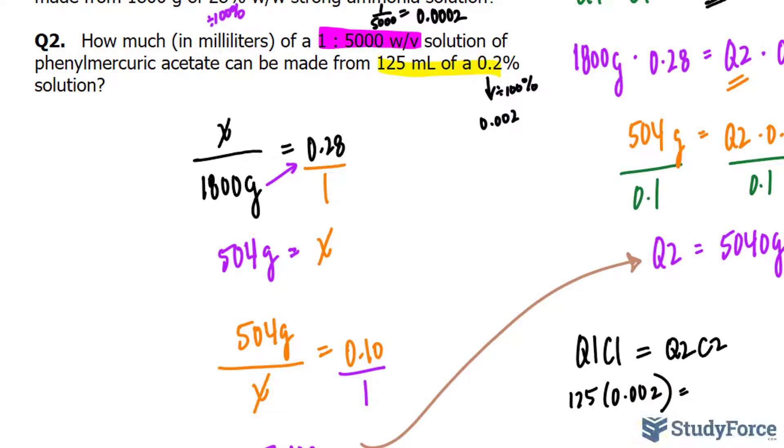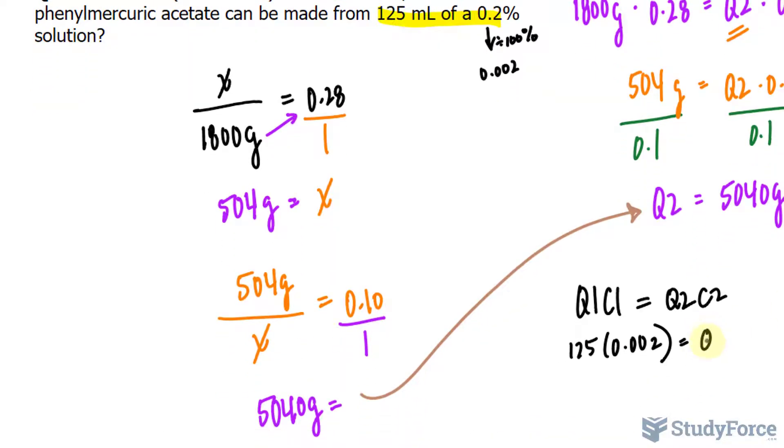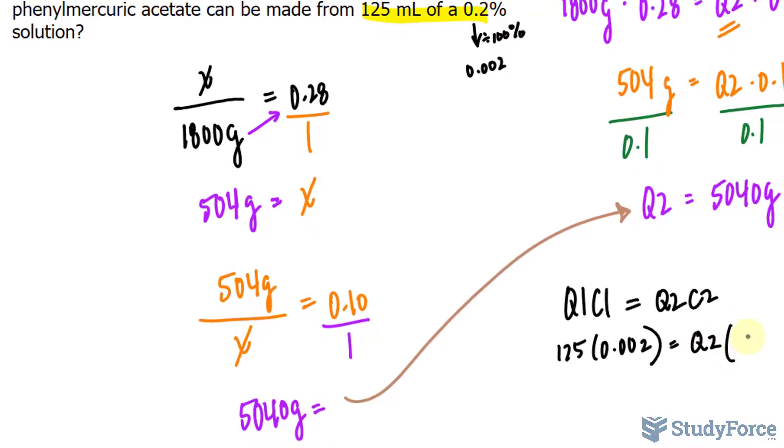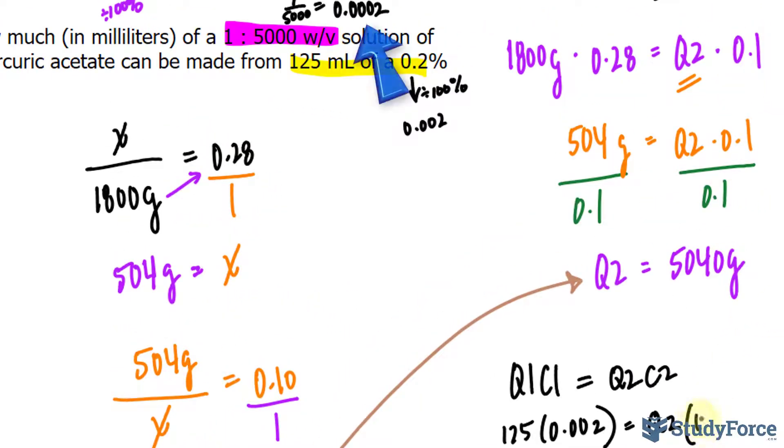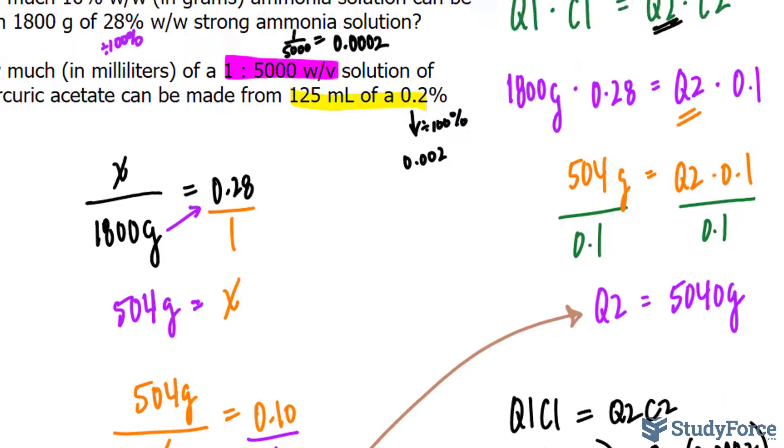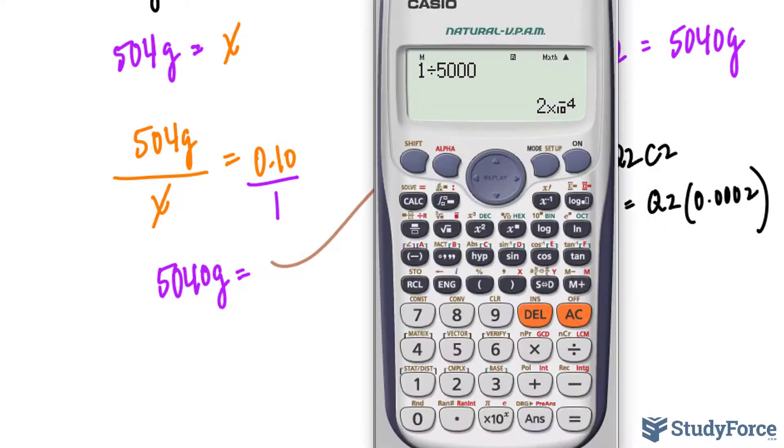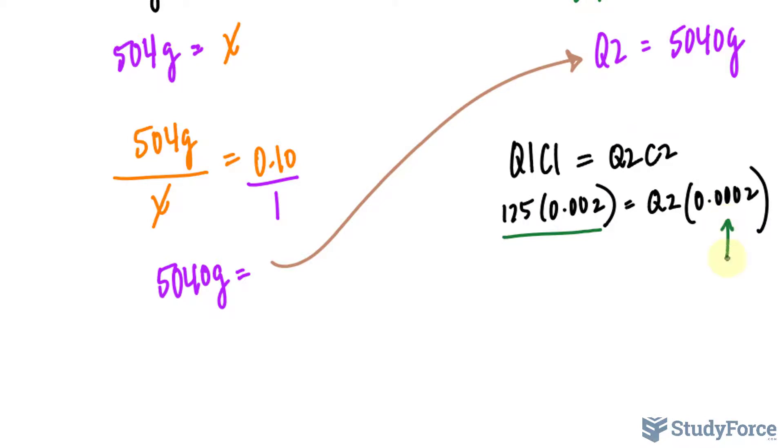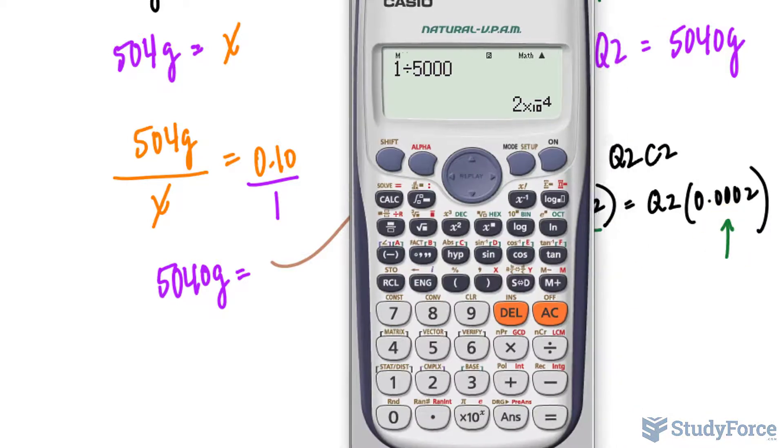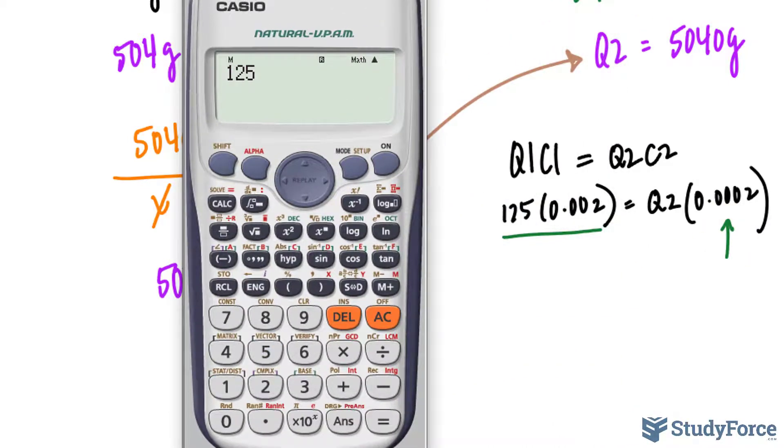And quantity 2 is what we're looking for. It has to have a strength of 0.0002. Let's go ahead now and solve for Q2, multiply these out, and then divide by this factor. 125 times 0.002.